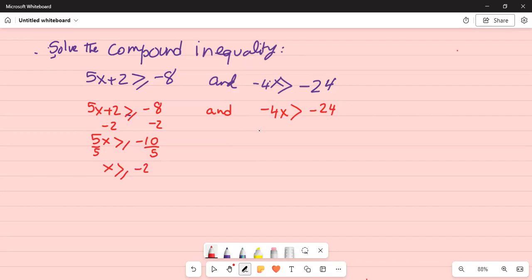Now for the second inequality, we will divide by minus 4 on both sides. Why by minus 4? Because we have to separate the variable x from its coefficient minus 4. Minus 4 times x, multiplication opposite is division.